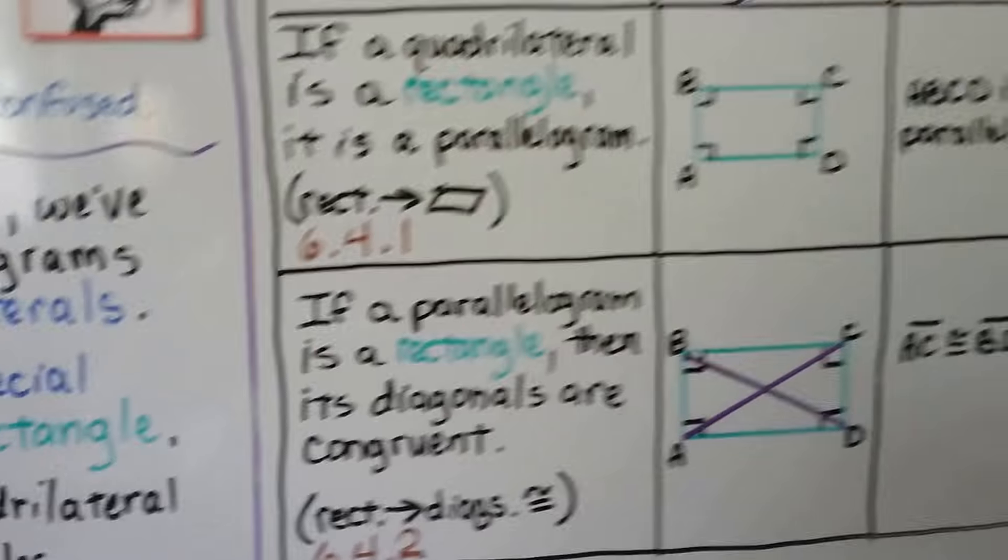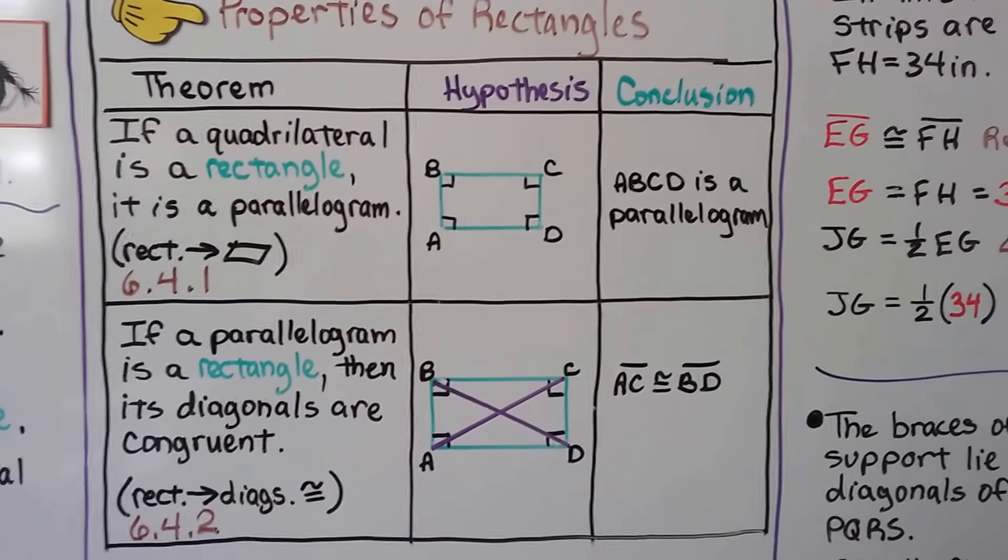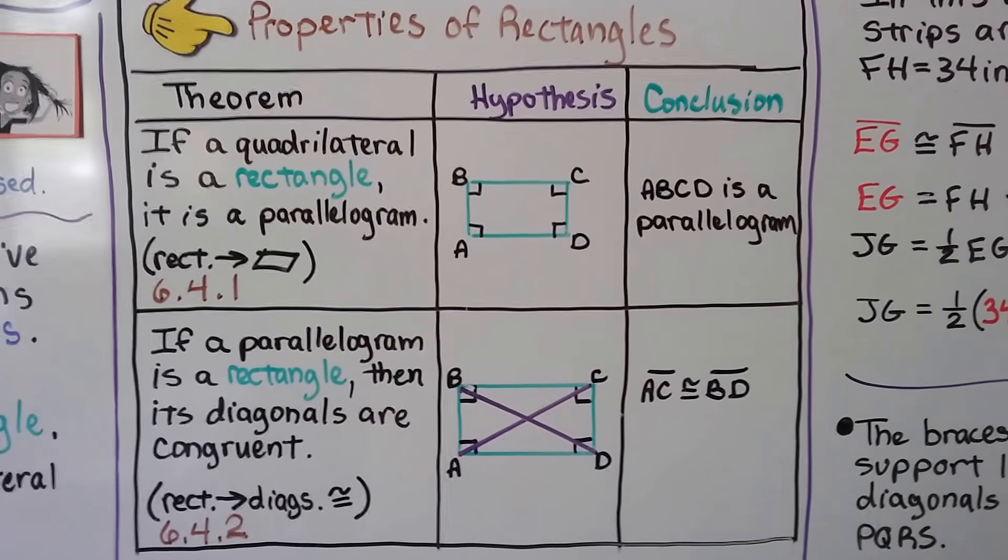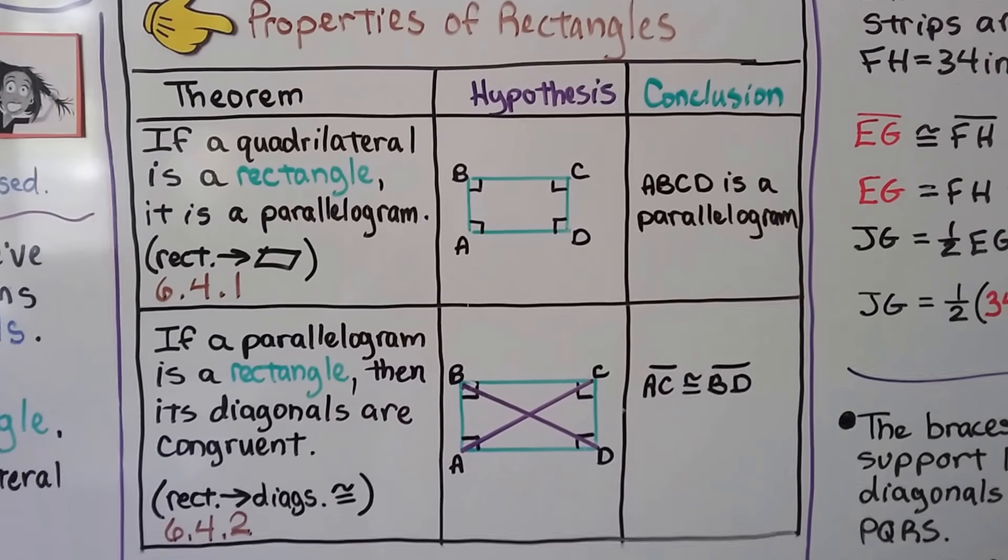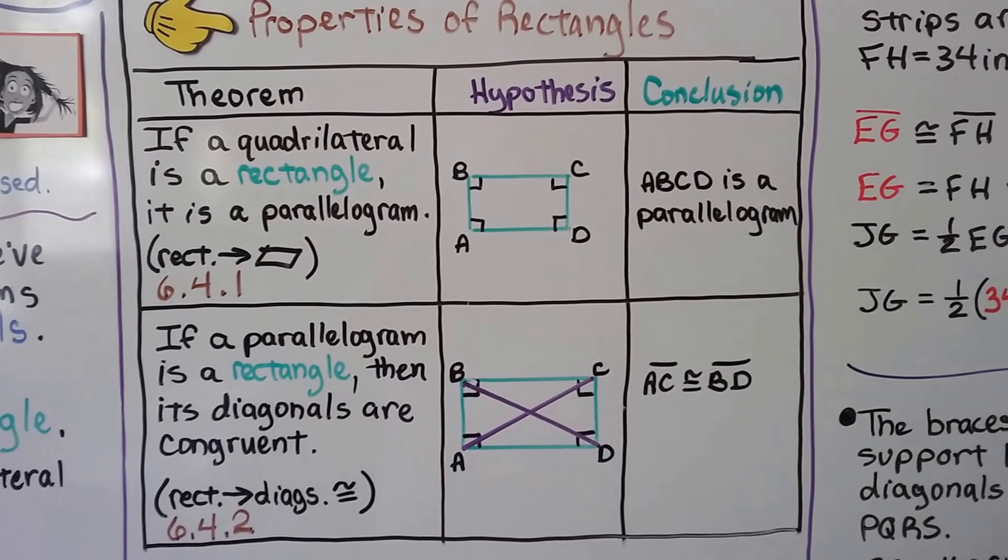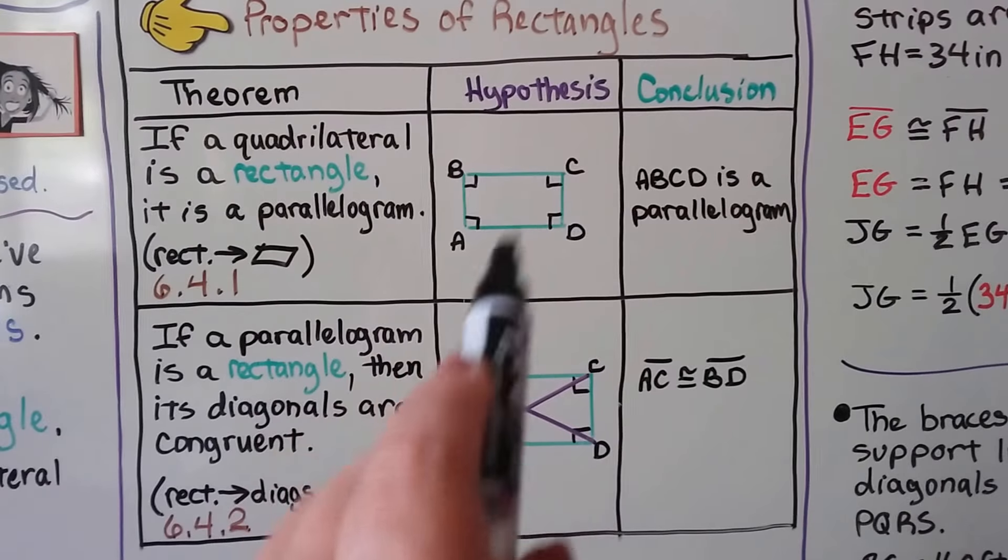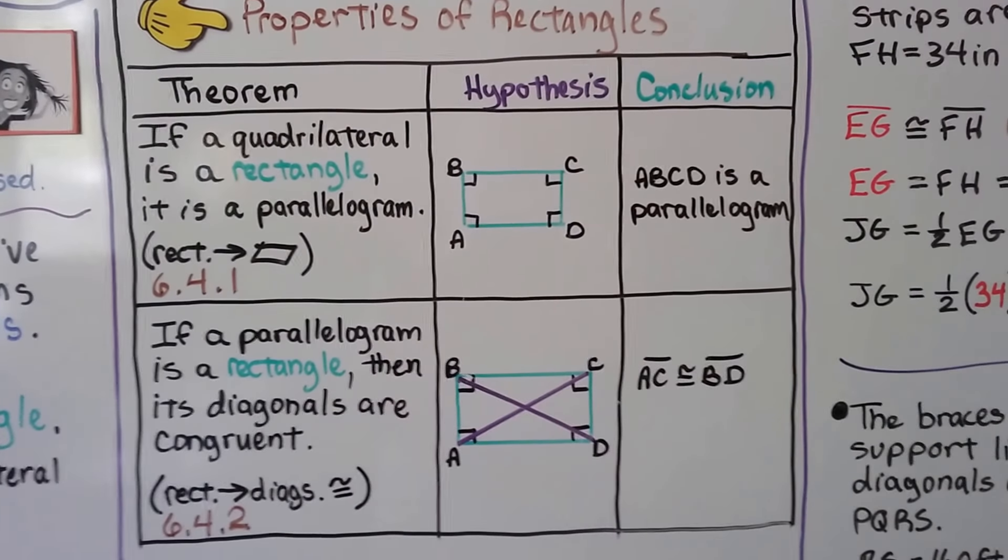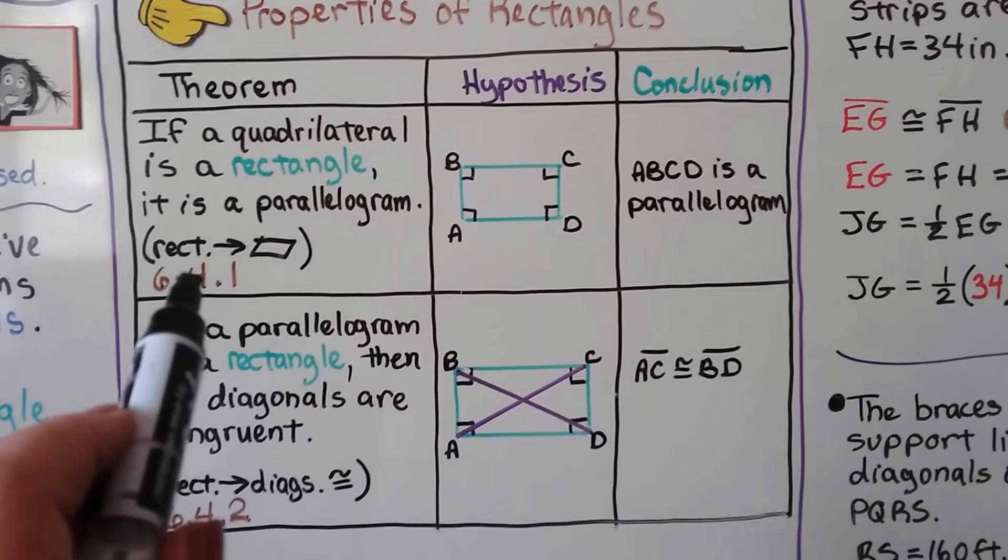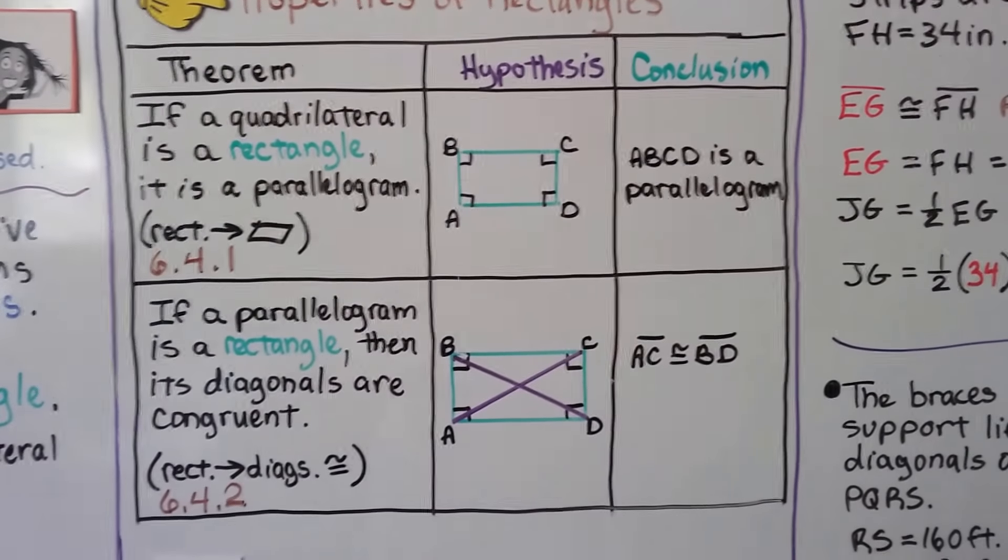So we have two theorems for the properties of rectangles. The first one says if a quadrilateral is a rectangle, it's a parallelogram. We've got four right angles. A, B, C, D is a parallelogram. We can write in geometric notation, rectangle, therefore parallelogram.